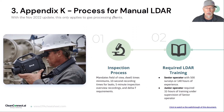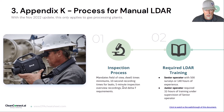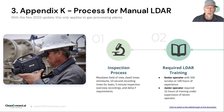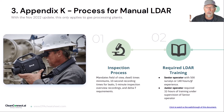Appendix K is something that changed between draft one and draft two, and now only applies to gas processing plants. It specifies how you conduct inspections — your dwell times, 10-second recording for leaks, delta-T requirements, and so on. It also covers LDAR training, including the concept of a senior operator and a junior operator with minimum requirements.